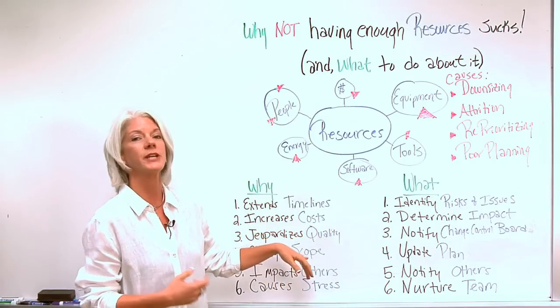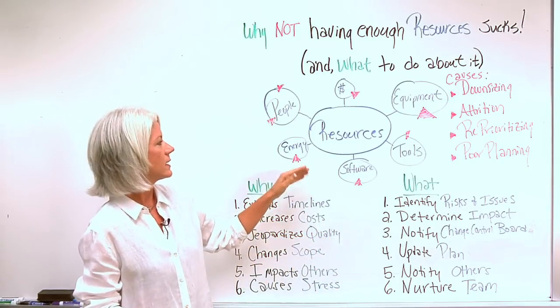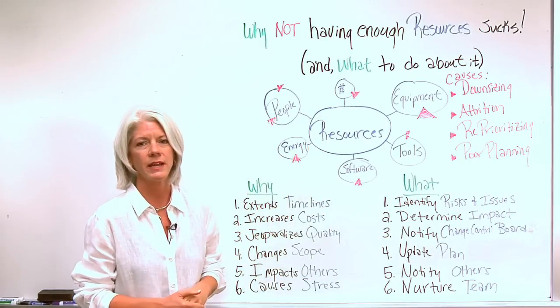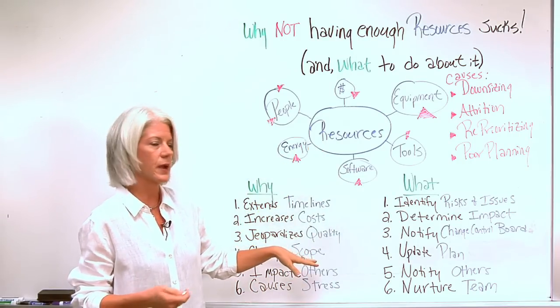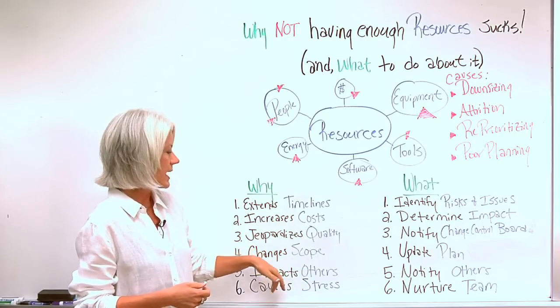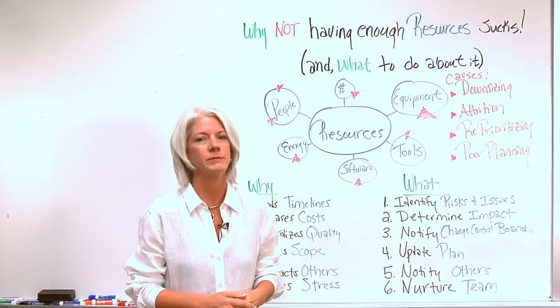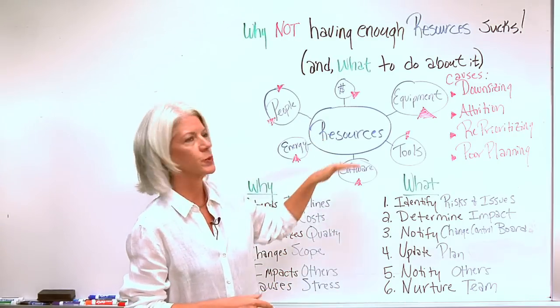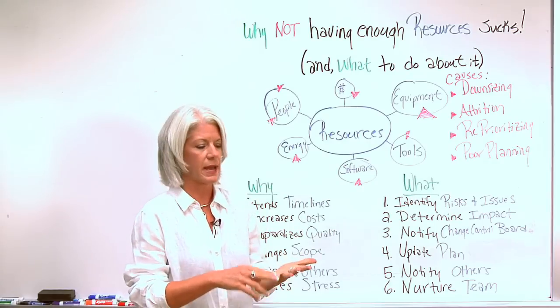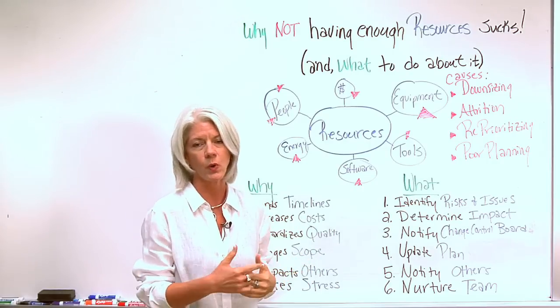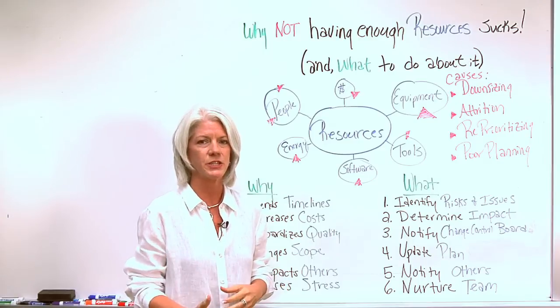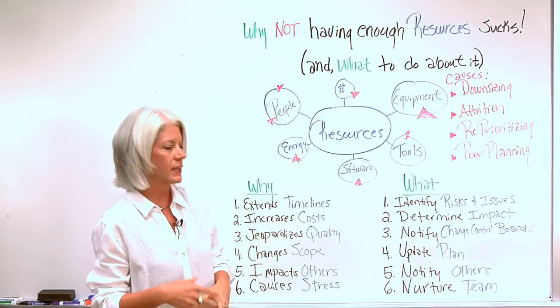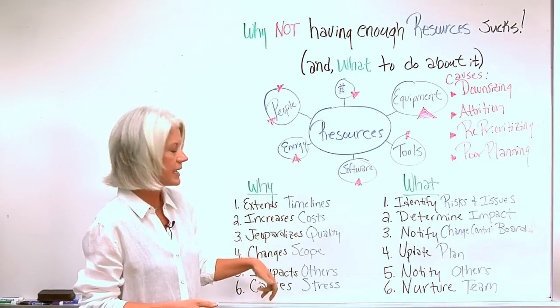Most of the time it changes the scope because it does impact other areas of the triple constraint, so it can determine how much scope you're able to complete. It impacts others. A lot of times when you're short of resources and it does impact your timeline, budget, scope, or quality, that's going to impact others - whether it's other people, organizations, your client, or your stakeholders.